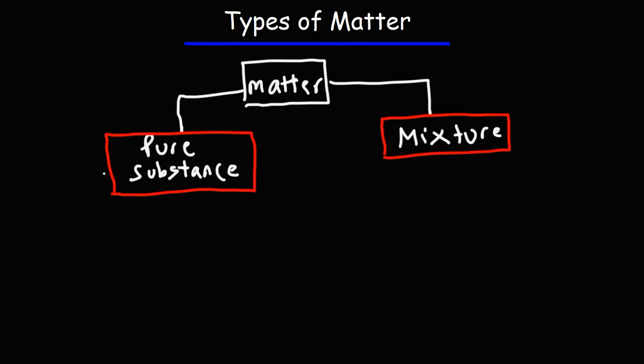Now pure substances can be broken down into elements or they can be broken down into compounds. So a compound is a pure substance and an element is also a pure substance.